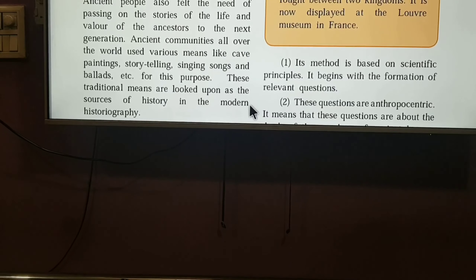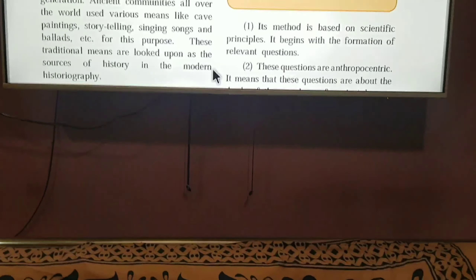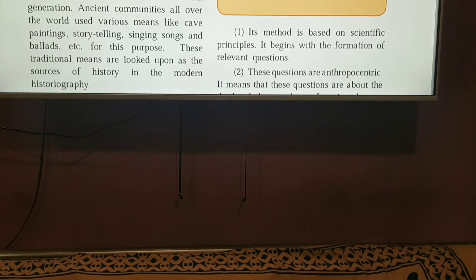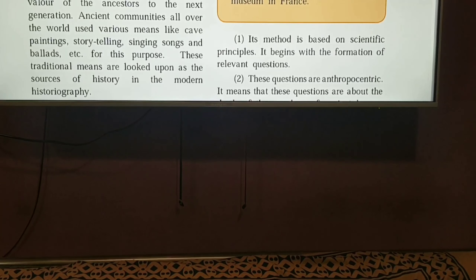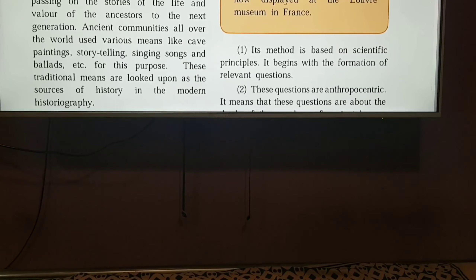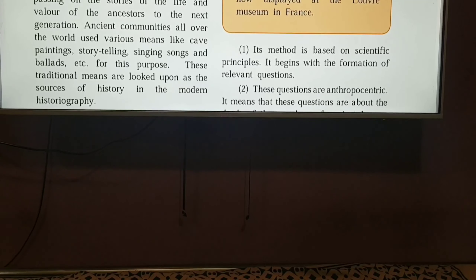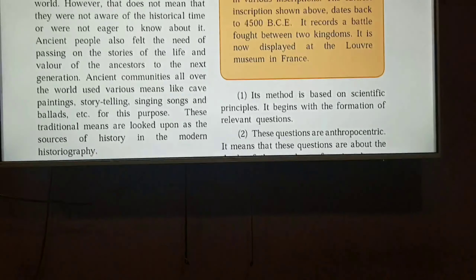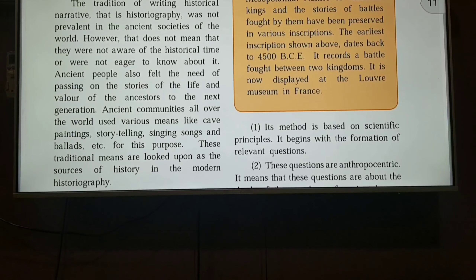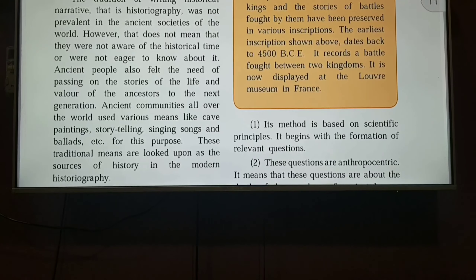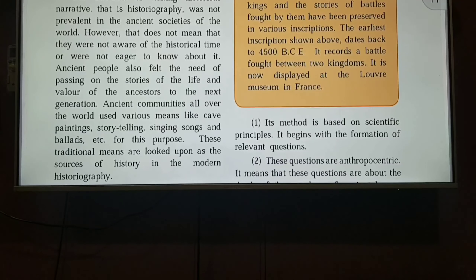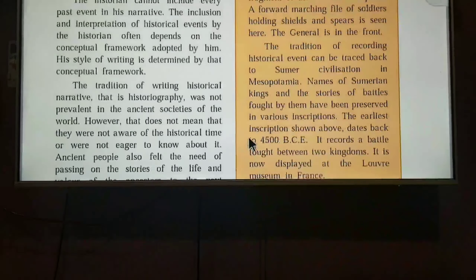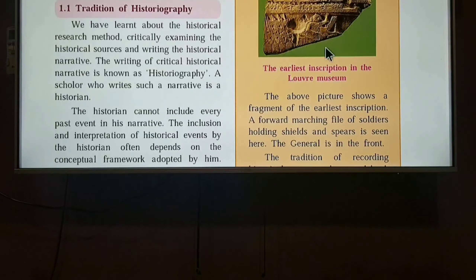Modern historiography is a method. It is based on scientific principles. It begins with the formation of relevant questions. When you are writing about history, there needs to be a proper method. You need to check why, how, when, and where something happened. For example, the earliest inscription in a museum shows a forward-marching file of soldiers holding shields and spears, with the general in the front.